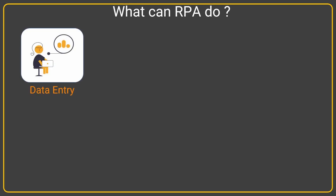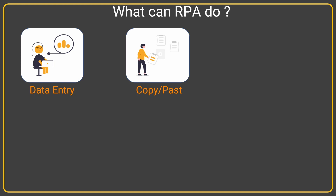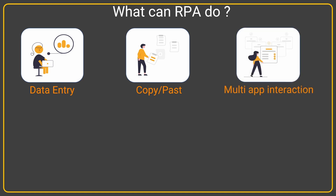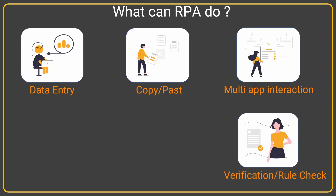So now the question is: what can it do? It can do data entry work for us — as humans repeatedly enter information into applications, entering data into forms is one of the better examples. Copy-pasting, such as scraping some content from a website and storing it in a spreadsheet, or copying information from a website to a Word document to create a report. It can also interact with multiple applications and perform verification or rule checks.